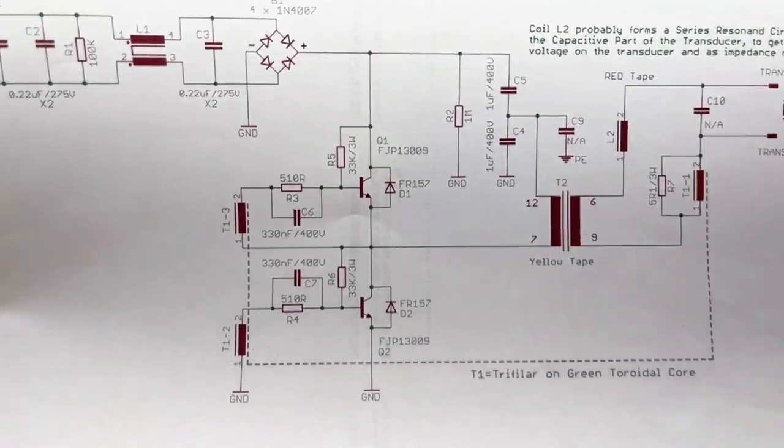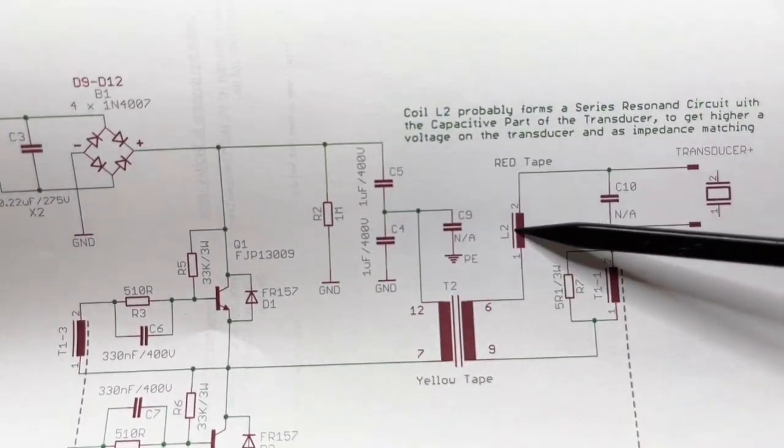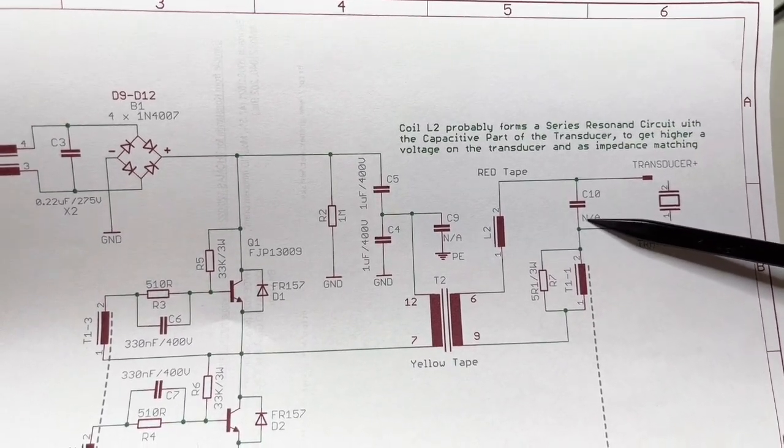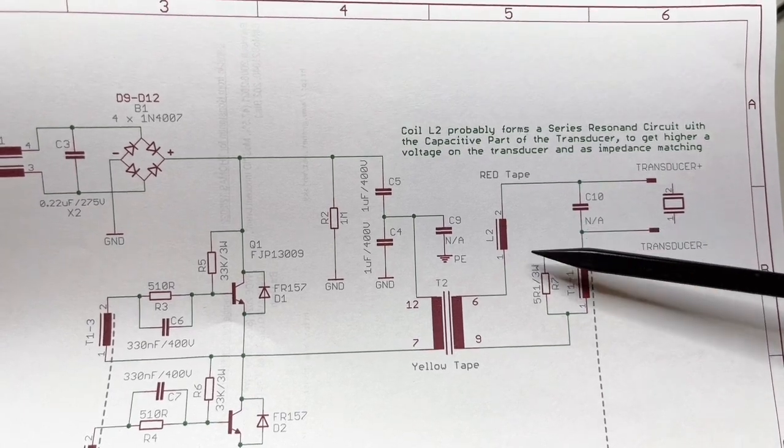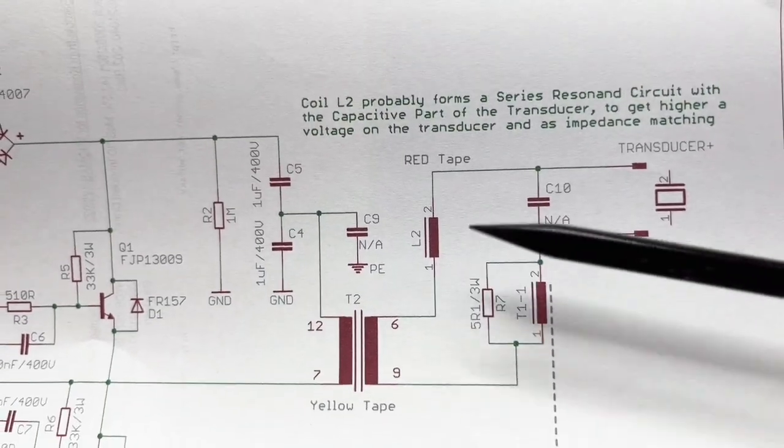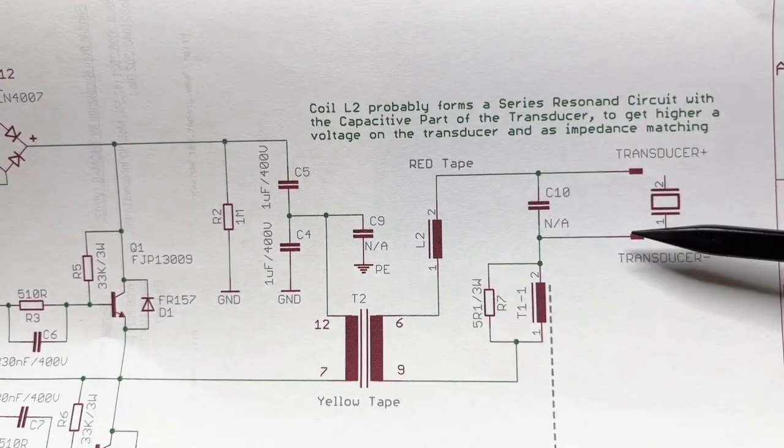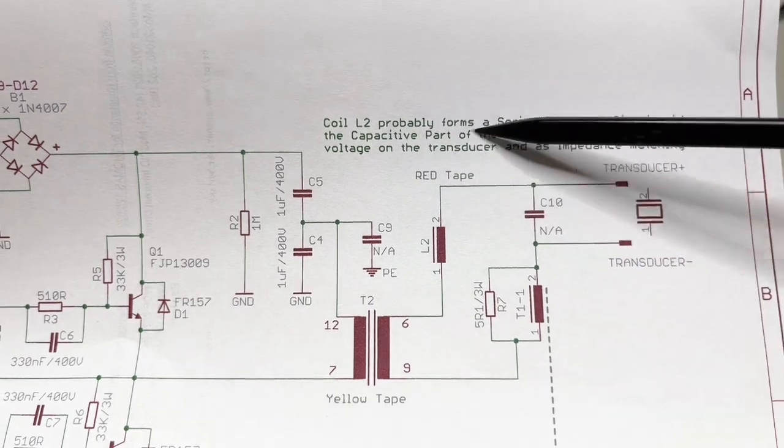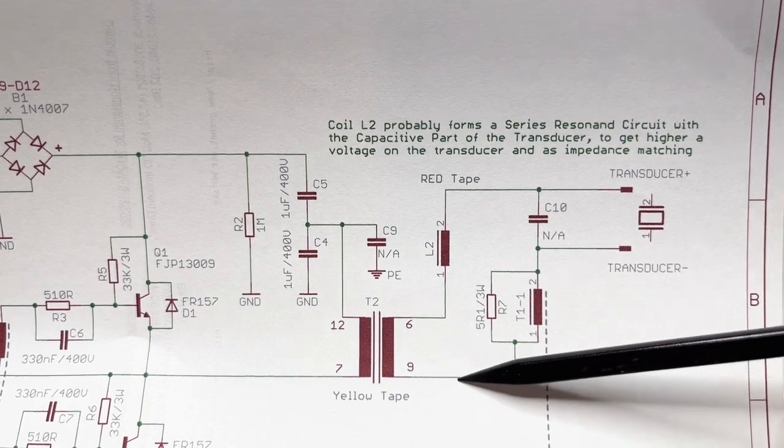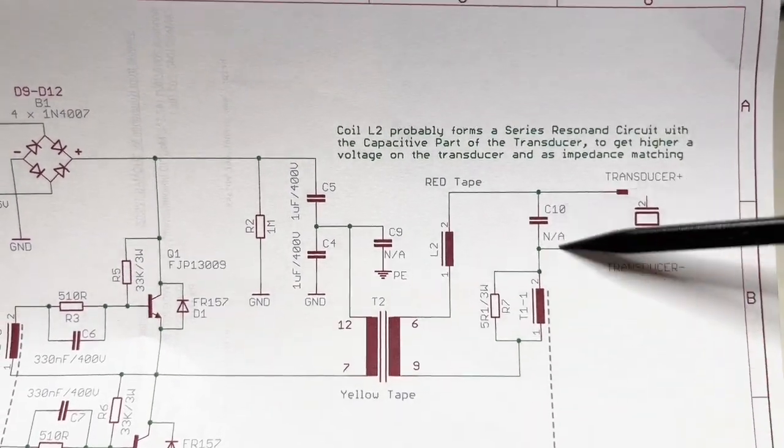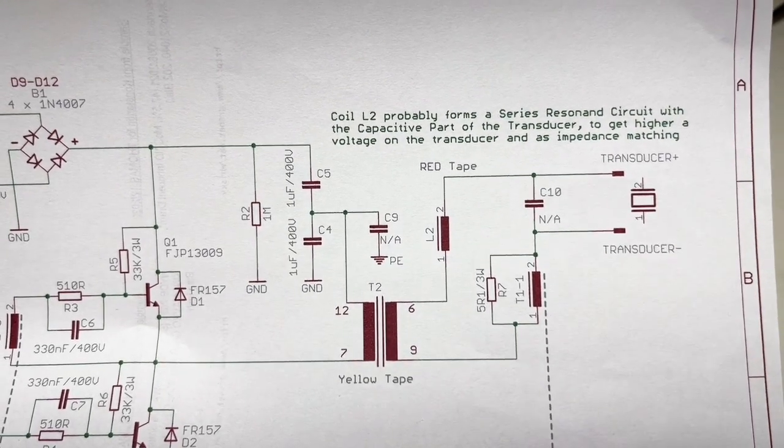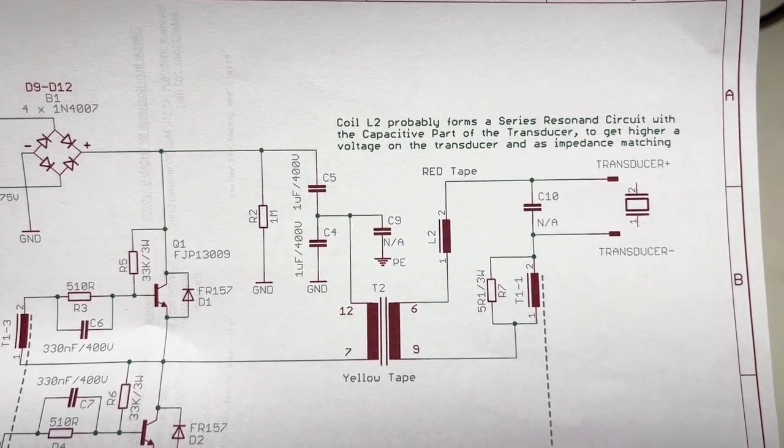In my opinion, how it works - the output in combination with a capacitor that is not populated at the moment is first of all for impedance matching the transducers. And secondly, or most important, L2 and the transducer forms a serial resonance circuit that amplifies even more the output sine wave. So you have quite a high voltage, a few hundred volts plus and minus on this transducer.